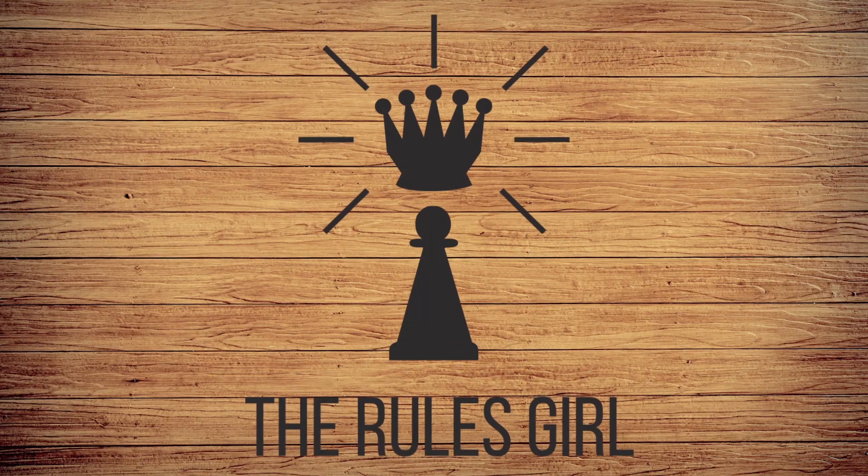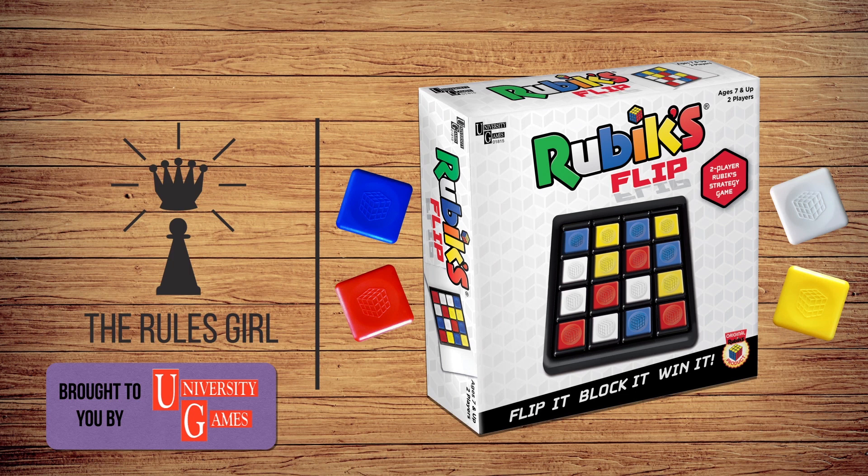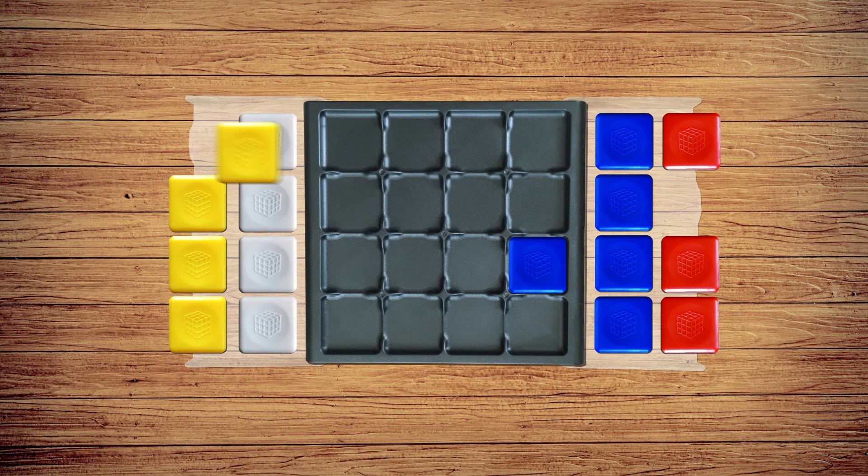I'm the Rules Girl and this is Rubik's Flip, a dueling game by University Games for two players. In Rubik's Flip, players compete for control of a 4x4 grid, flipping their opponent's tiles and placing their own.